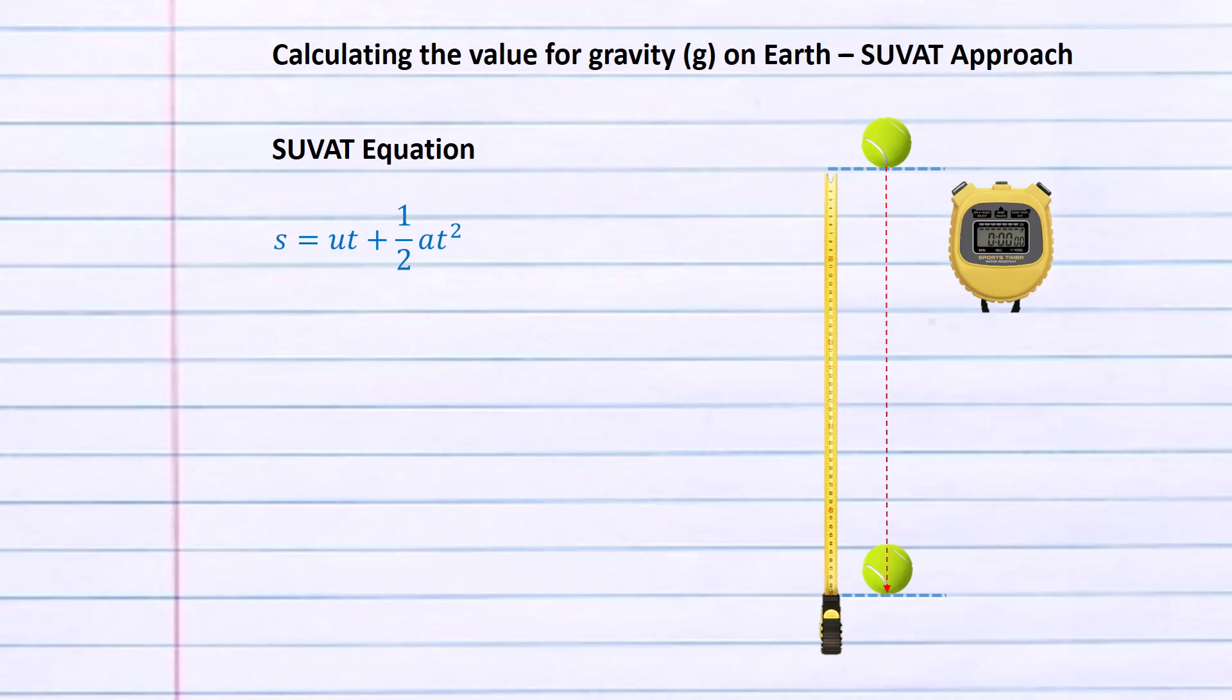We wish to rearrange this equation and make A the subject because we're trying to solve for the acceleration. Let's simplify this equation. First, we know that the initial velocity is zero. So the product of U times T when U equals zero will also be zero. That simplifies our equation to S equals a half AT squared. Now we can multiply both sides by two to get rid of the half, which leaves us with 2S equals AT squared.